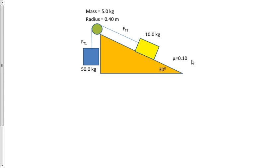In this question, we are going to review the concepts covered with a pulley system where one block pulls something down and the other gets pulled up. This, of course, has friction along the incline, but now something new: the pulley has a mass and a radius as provided.